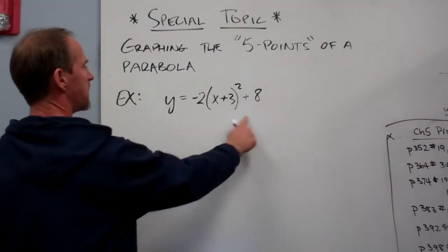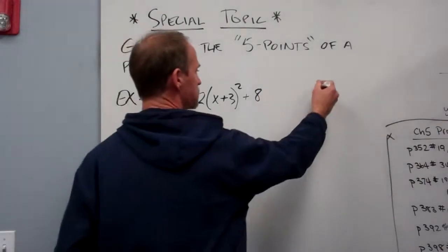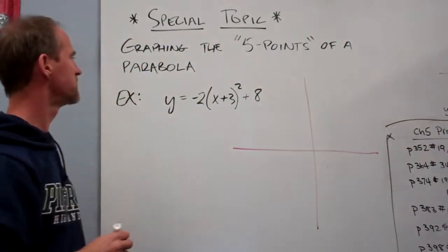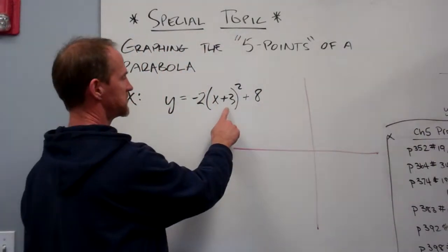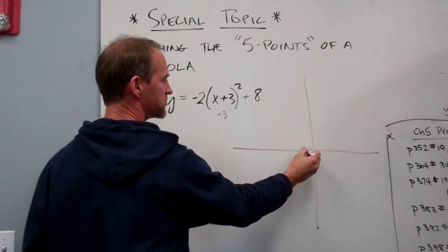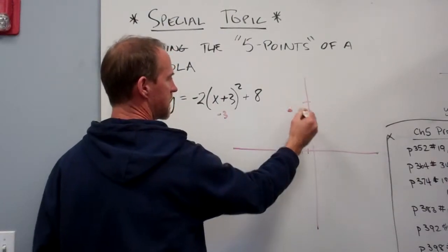We're given a parabola, and this is in vertex form, so right away we should be able to find a couple of these points really quickly. If this is my coordinate system, I know that the vertex is going to be at negative 3 and positive 8. So I go over 1, 2, 3, 5, 10, and there's our vertex.